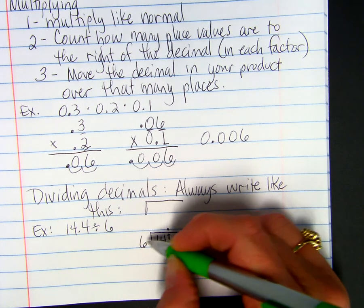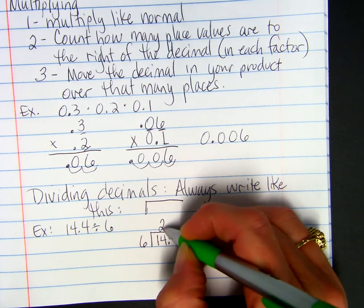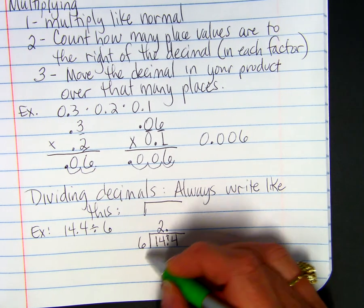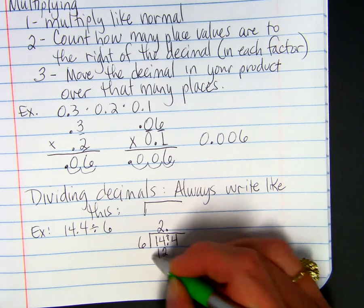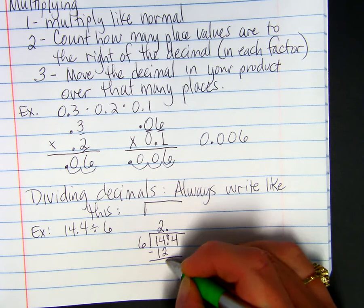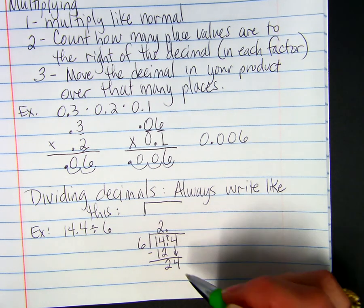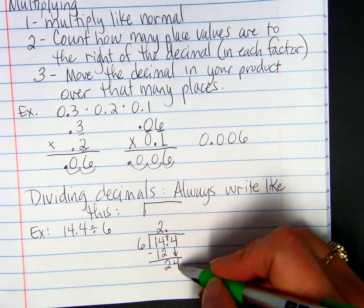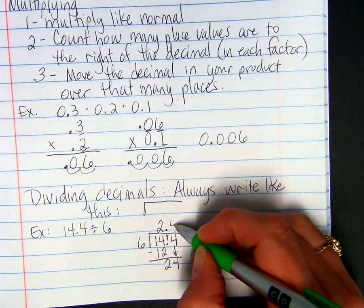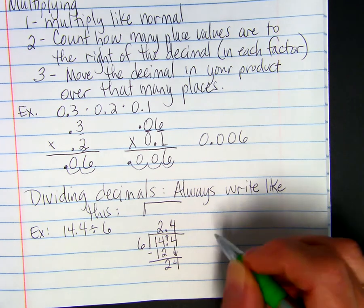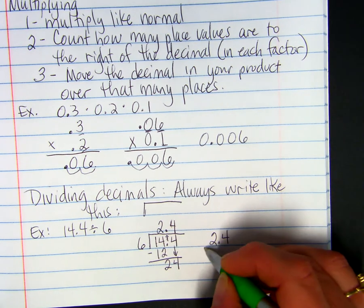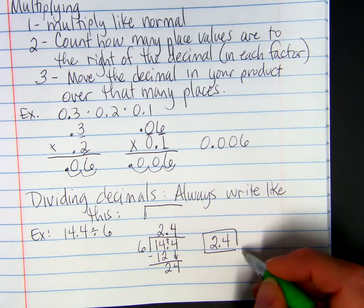So, 6 doesn't go into the first number. 6 goes into 14 twice. So, 2 times 6 is 12. Then, we subtract, get a 2, bring down. Now, we divide again. 6 goes into 24 four times. And, that four goes above the one that you just brought down. So, the answer would be 2.4.